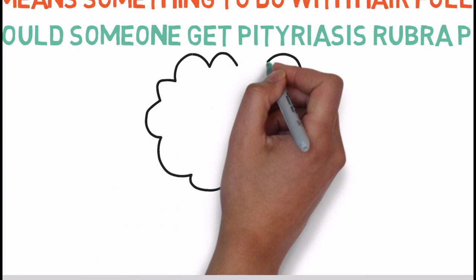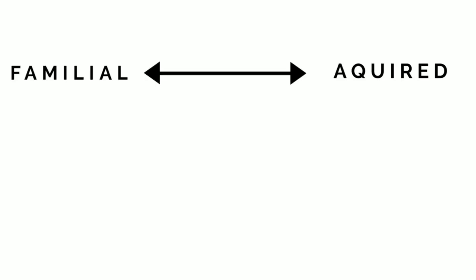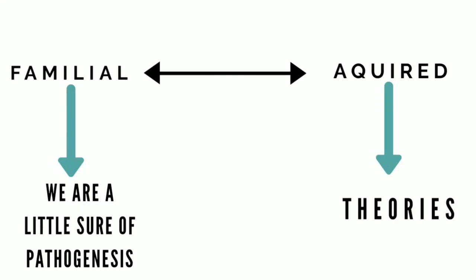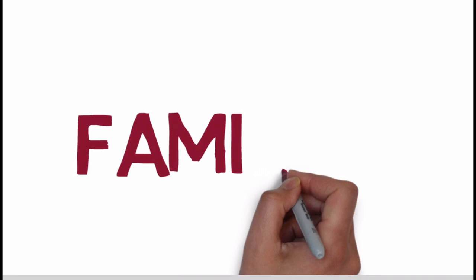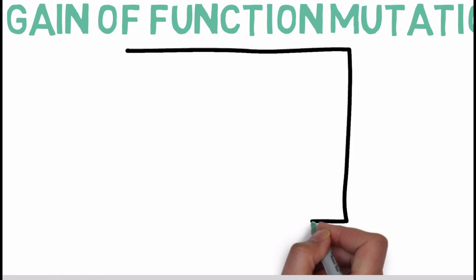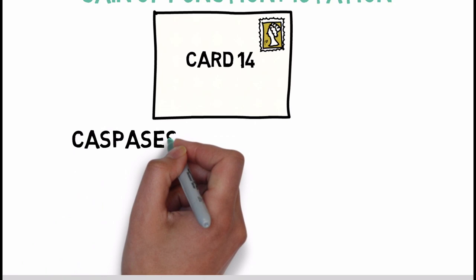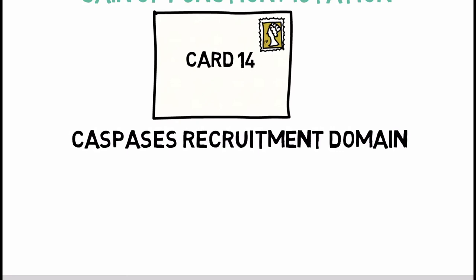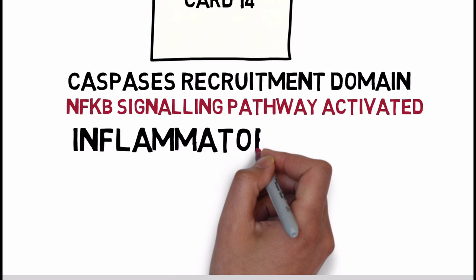Why would someone get Pityriasis Rubra Pilaris? Well, we don't know — some theories have been proposed. There are two forms: familial and acquired. We are a little more sure about the pathogenesis of the familial form. The familial form has been linked to a gain-of-function mutation in the CARD14 gene — Caspase Recruitment Domain 14 — which results in activation of the NFkB signaling pathway, resulting in inflammatory disease.